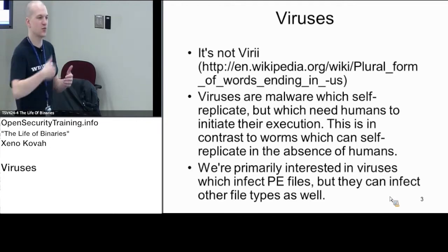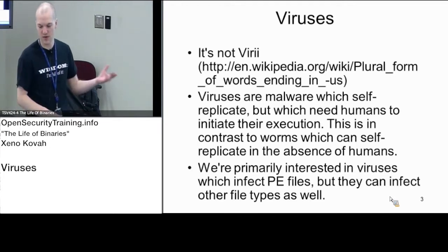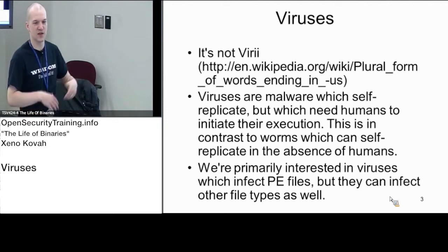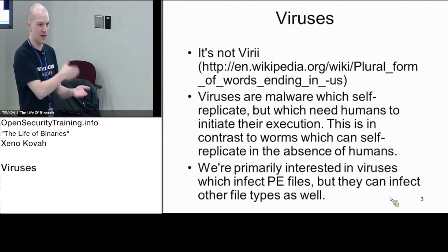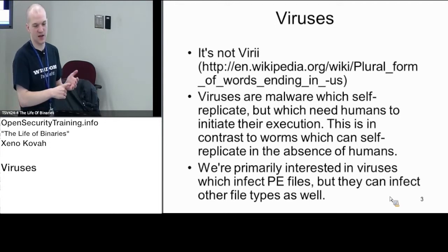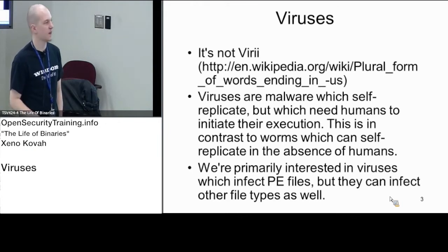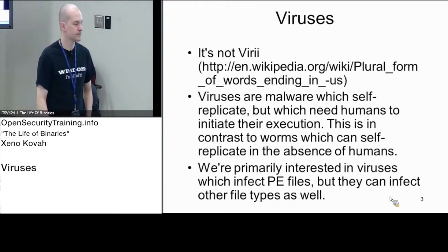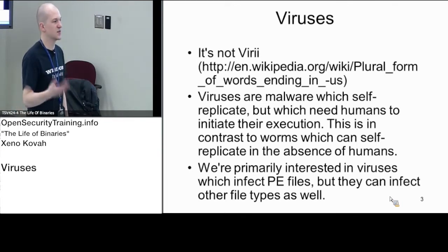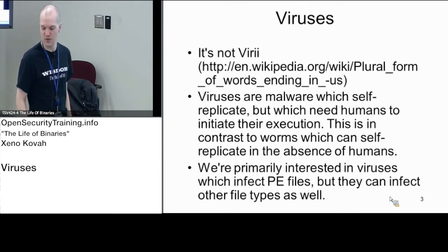A worm would use an exploit to automatically hop between systems, whereas a virus — if you think boot sector viruses back in the floppy disk days — you've got a human walking around with a disk, plugging it into different machines. Yes, it can automatically copy itself to files, but in order to jump between machines it needs a human either clicking on a social engineering email or moving a file on a floppy disk. So I consider a virus something that self-replicates but still needs humans to move between systems.